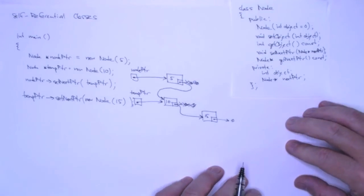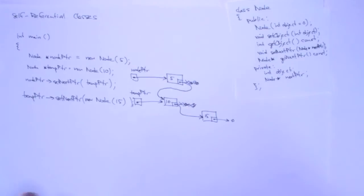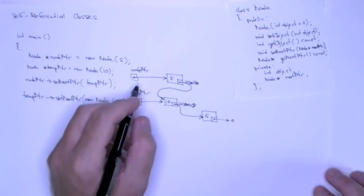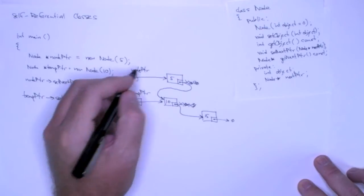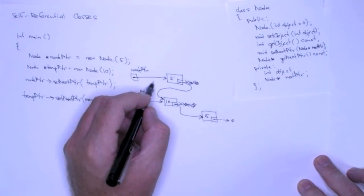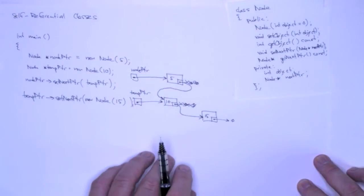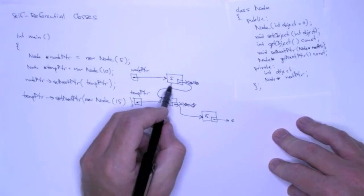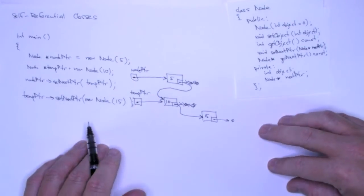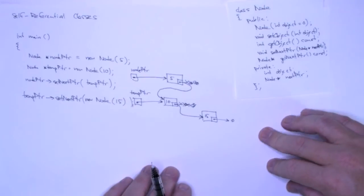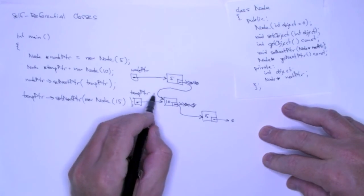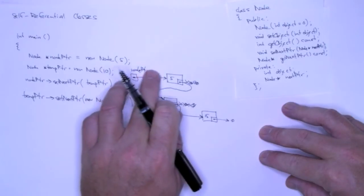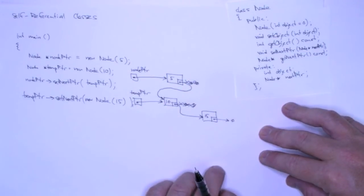A couple of observations before we go on. If something happens to node pointer, I can no longer get to five — we call this an external pointer. You always have to maintain a pointer to the beginning of this list because it's directional. If I got rid of node pointer I could still get to ten and fifteen through temp pointer, but I would no longer have access to five, and that would be a memory leak. So it's very important to be careful how you manipulate these. I can change temp pointer because even though I will no longer have direct access to ten, I can get back to ten through node pointer and through five.